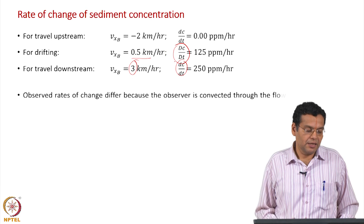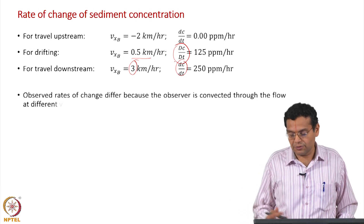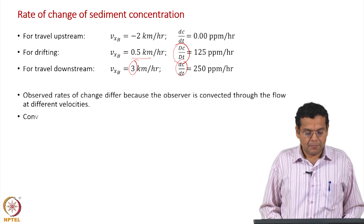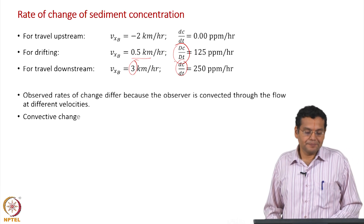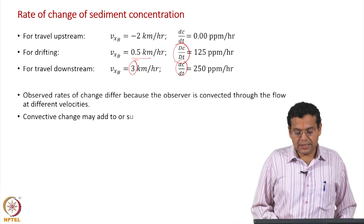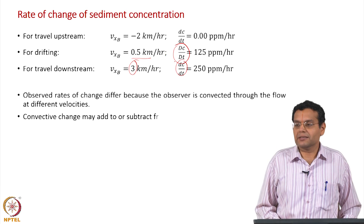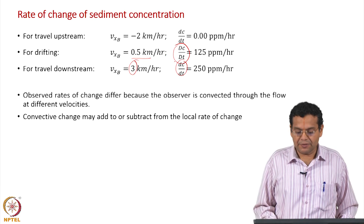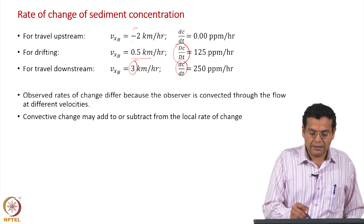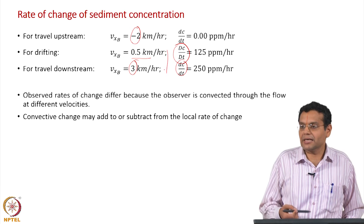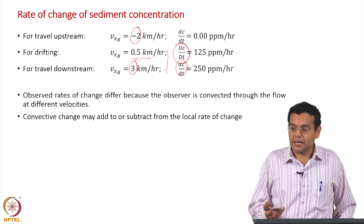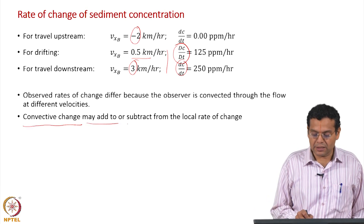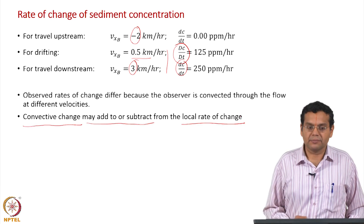The observer is no longer moving at the same velocity as the fluid, but at different resulting velocities — that is the reason for observing different rates. The convective changes may add to or subtract from the first term based on the velocity; either can add or subtract. The convective change (second term) may add to or subtract from the local rate of change (first term).